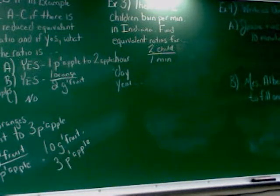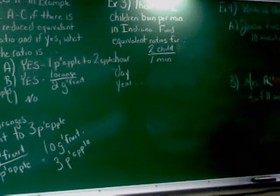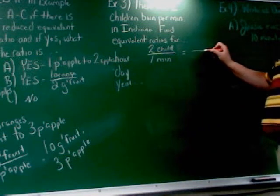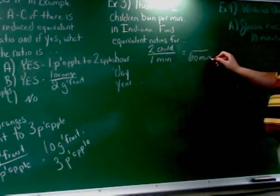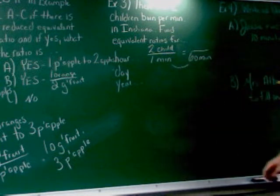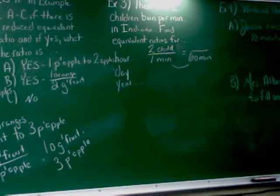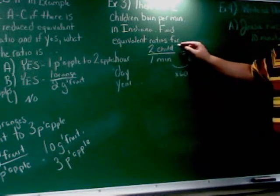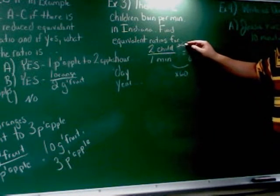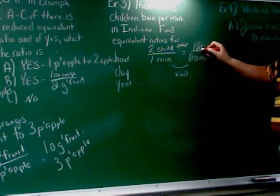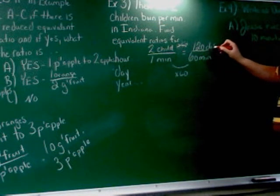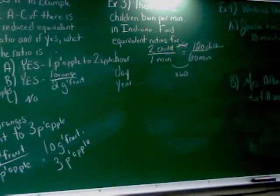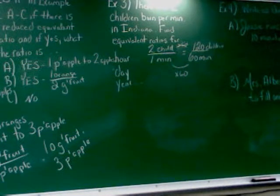So you can see next to hour, I already wrote out there's two children born per minute. Now, if I want to find out about an hour, what I really need to find out is about 60 minutes because there's 60 minutes in an hour. So I want to turn this into something over 60. Well, to get from 1 to 60, you've got to multiply by 60. So I'm just going to do the exact same thing on the top. Multiply by 60 and get 120. So there's 120 children born every 60 minutes or every hour in Indiana.